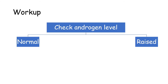Coming to the workup of the patient, the first thing is to check the level of androgens. If the level of androgens is normal, then the person is said to be suffering from idiopathic hirsutism — because although the level of androgens is normal, the person is still suffering from hirsutism. If androgens are raised, we proceed to further workup.